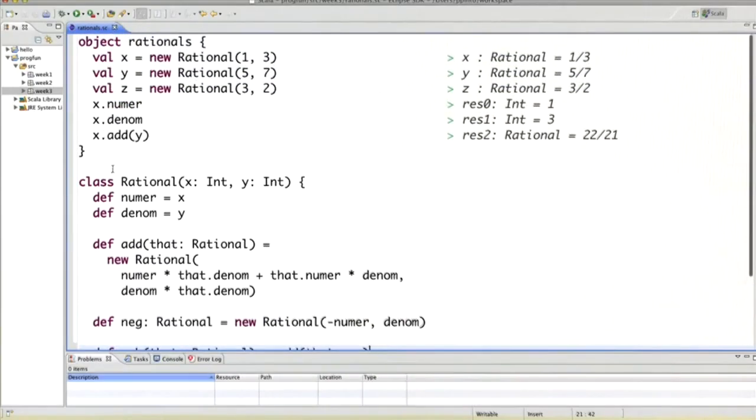So once we have that, let's add the test case. That would be x subtract y subtract z. And we get the answer minus 79 divided by 42.